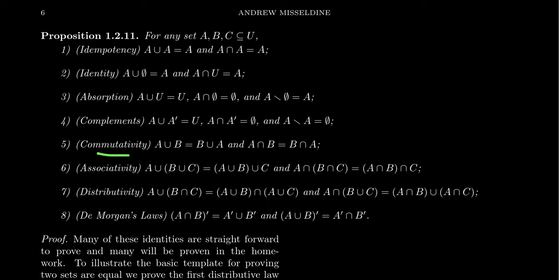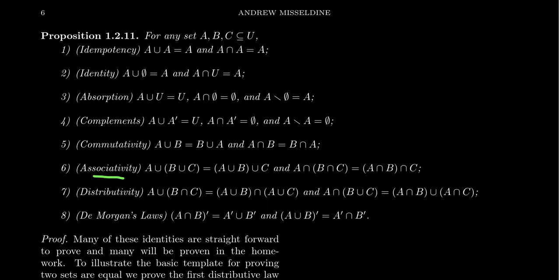Set algebra is commutative: A union B equals B union A, and A intersect B equals B intersect A — we're used to the commutativity property with addition and multiplication. Associativity has to do with rearranging parentheses: A union (B union C) is the same thing as (A union B) union C. The same is also true for intersection — you can redo the parentheses and it's always true. So the associative property holds for set operations.